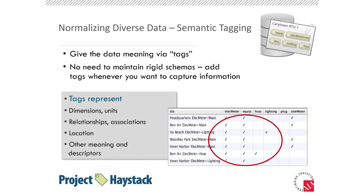The concept of normalizing data and making it useful really boils down to giving the data meaning. The data has to have some meaning so that we can interpret it and use software tools to automatically interpret it. We want to add descriptors — we'll call them tags — to our data to describe the attributes, the meaning, the facts about the data. Let's go through a quick example.